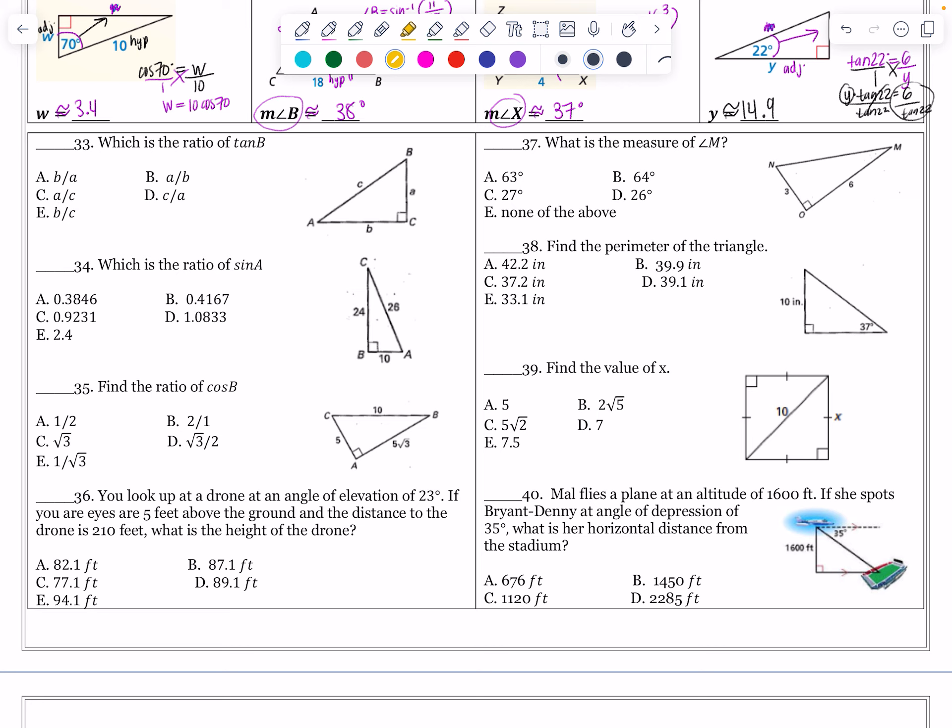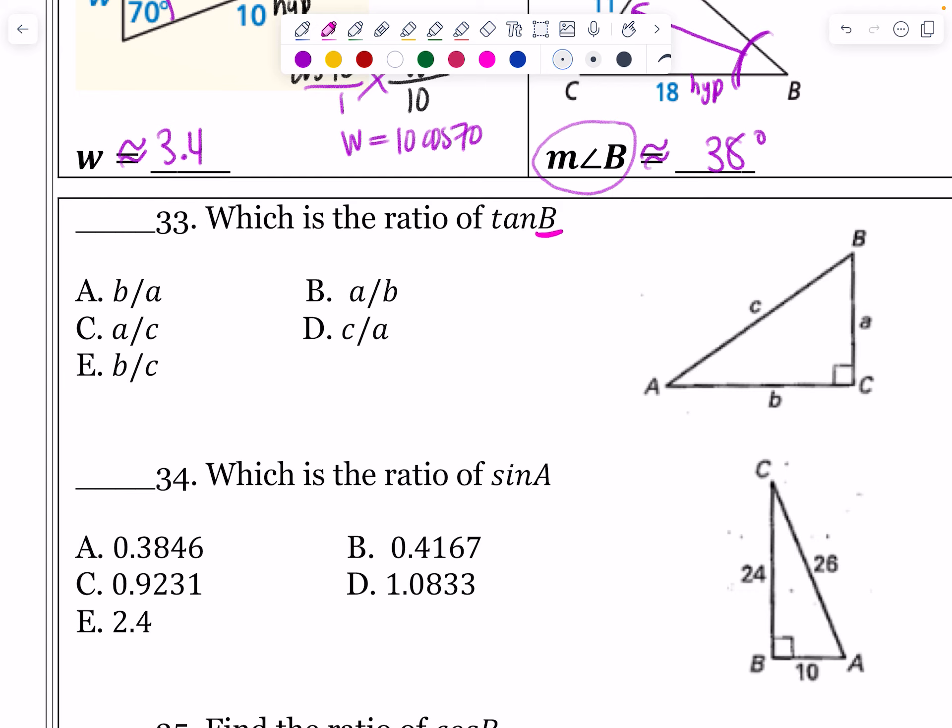Number 33 says, what is the ratio of the tangent of angle B? So first of all, go from B's perspective, put an eyelid right there. What is tangent? Tangent is going to be opposite over adjacent. So from B's perspective, what is opposite? Opposite would be B. Adjacent would be A. That's going to be B over A. Which fraction says that? That's going to be A. None of the other ones said B over A. Be careful, because some people might want to choose A over B, but it's got to be opposite over adjacent.